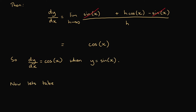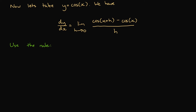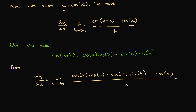Now let's take y equal to cos x. Then dy/dx equals the limit as h tends to 0 of [cos(x+h) minus cos x] all over h. Using the trigonometric angle sum rule, cos(x+h) equals cos x cos h minus sin x sin h. This gives dy/dx equal to the limit as h approaches 0 of [cos x cos h minus sin x sin h minus cos x] all divided by h.